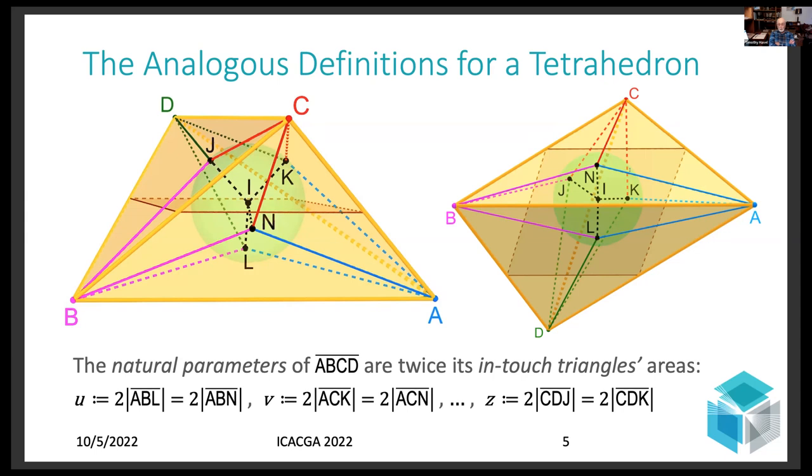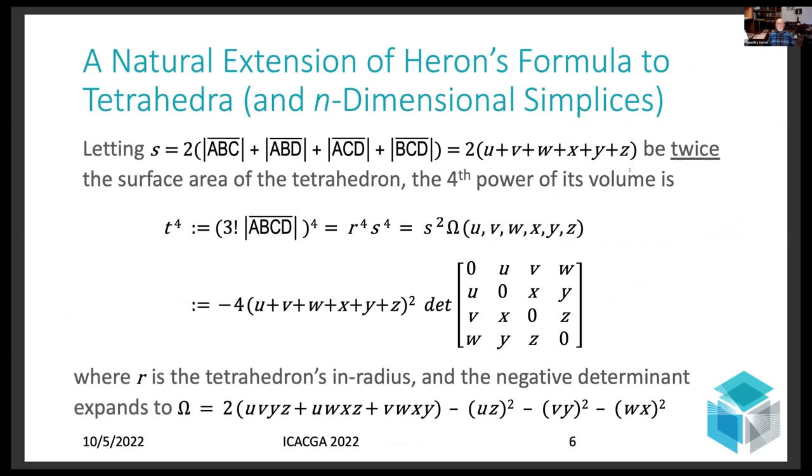The factor of two incidentally is included just because I prefer to make everything equivalent by working with parallelogram areas rather than triangle areas. And I'll also be working with the volume of the parallelepiped rather than the volume of the tetrahedron, which is one-sixth the volume of the parallelepiped. And with that, here's the extension of Heron's formula to tetrahedra and beyond.